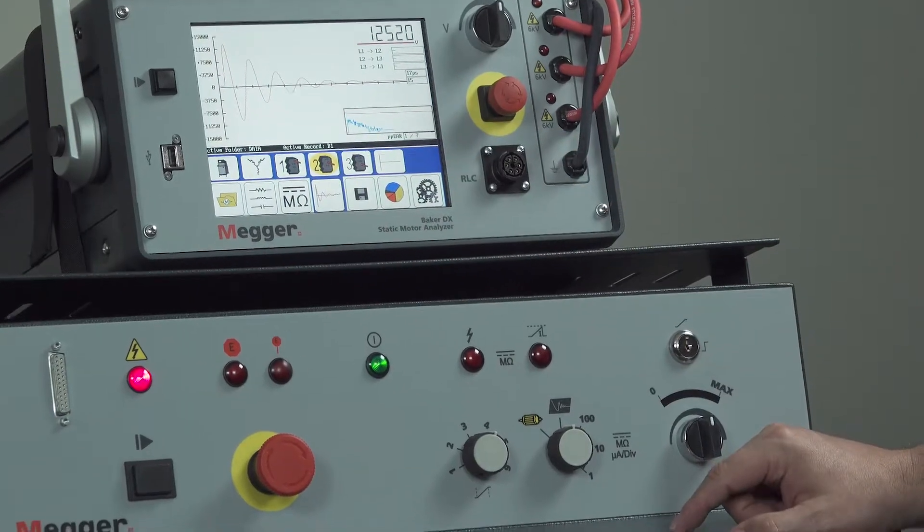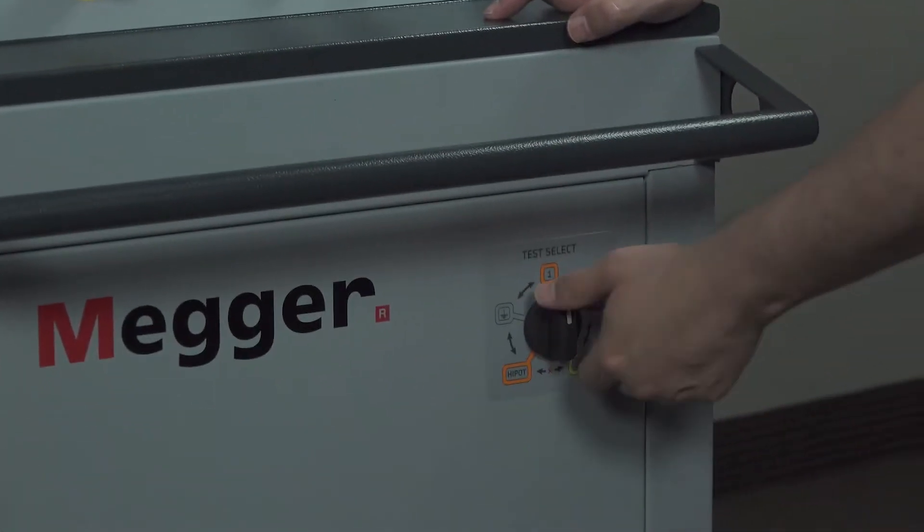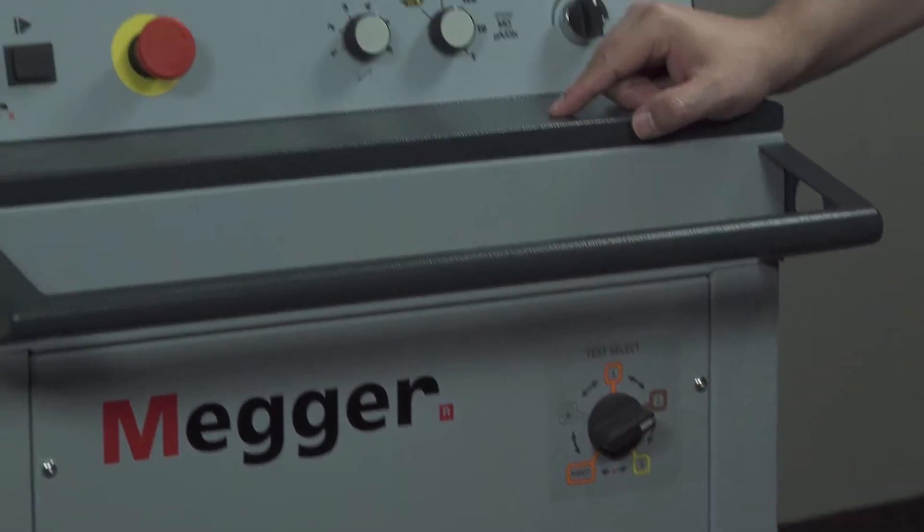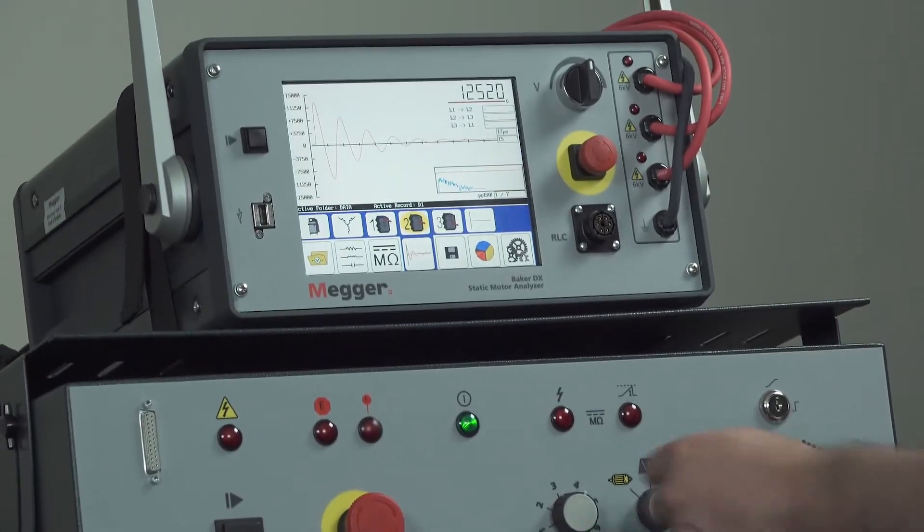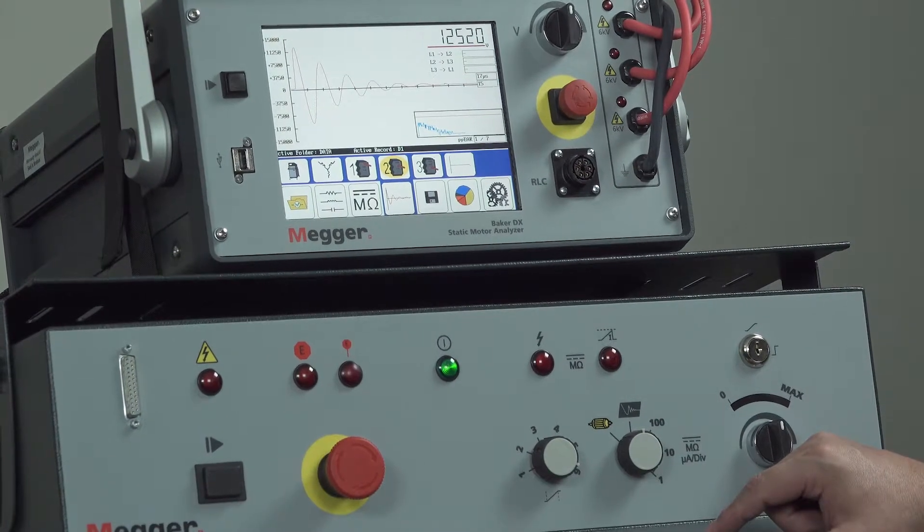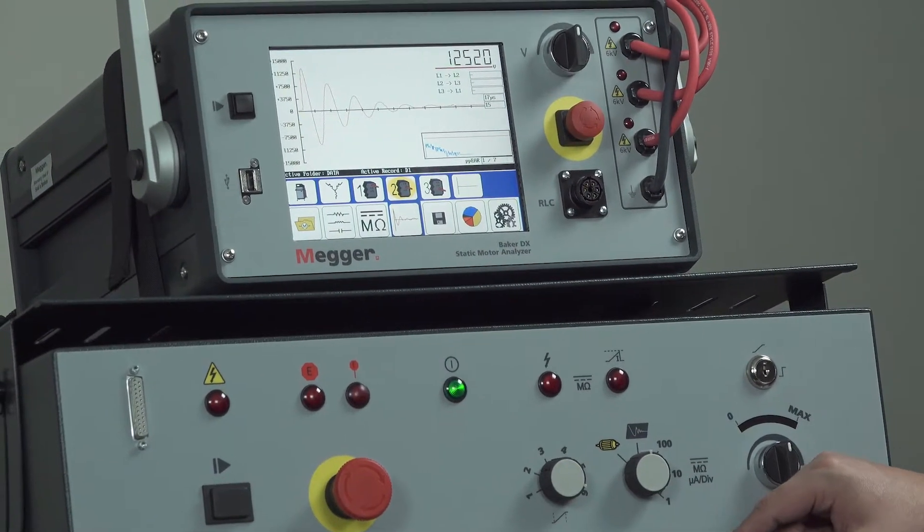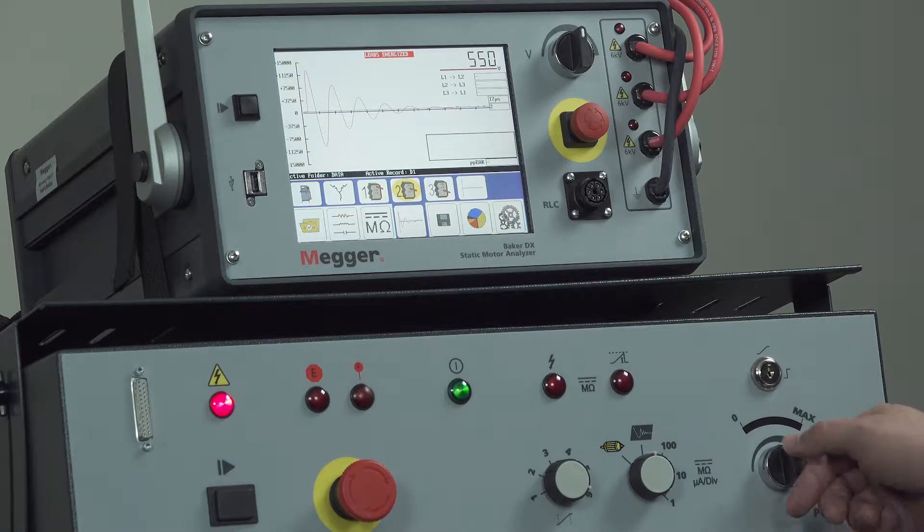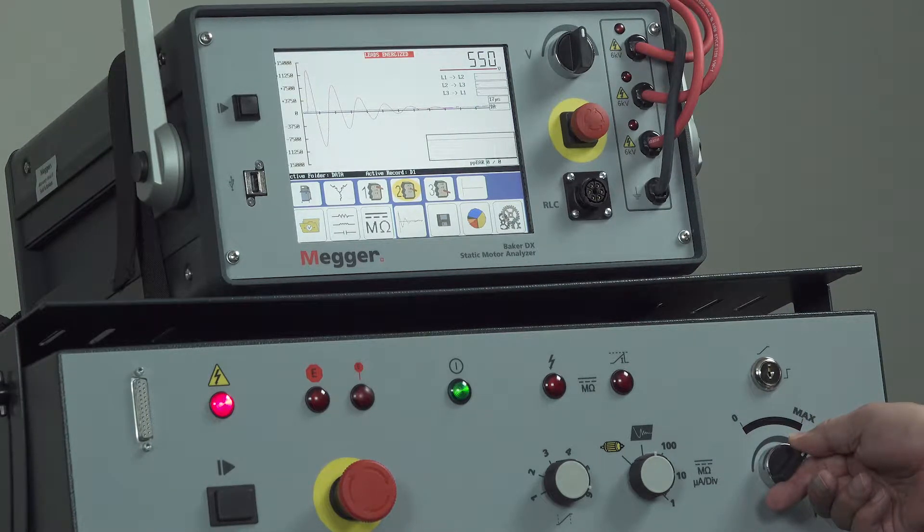Now we're ready to move on to lead two. Make sure we take the test lead selector switch to the lead two position. We can reduce the ramp rate to six. Press the foot switch to initiate the test, and begin ramping the voltage.